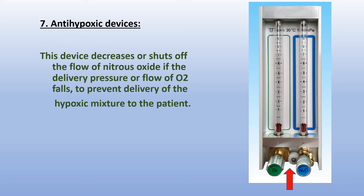The anti-hypoxic device decreases or shuts off the flow of nitrous oxide if the delivery pressure or flow of oxygen falls, to prevent delivery of a hypoxic mixture to the patient, as shown by the red arrow here. When the oxygen falls, the nitrous oxide will shut off, to prevent delivery of nitrous oxide to the patient without oxygen, because nitrous oxide does not provide the metabolic requirement of the patient and the patient would become hypoxic.